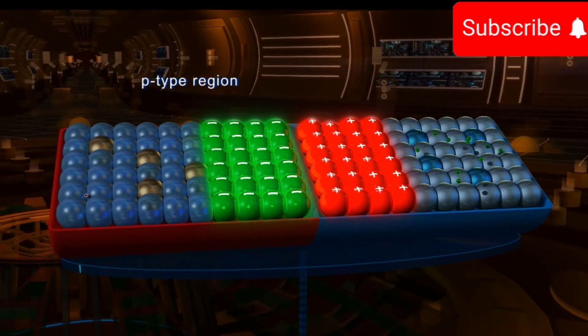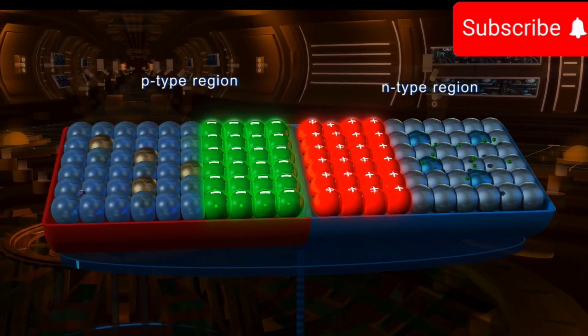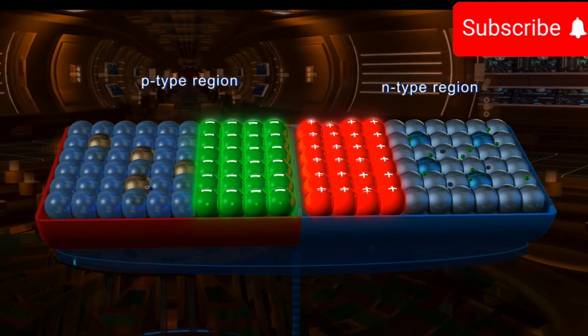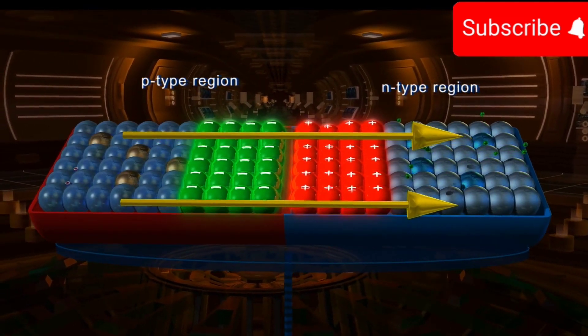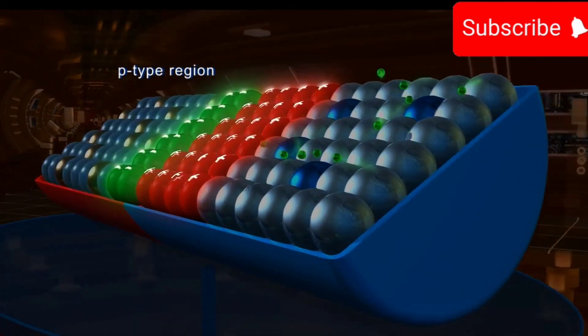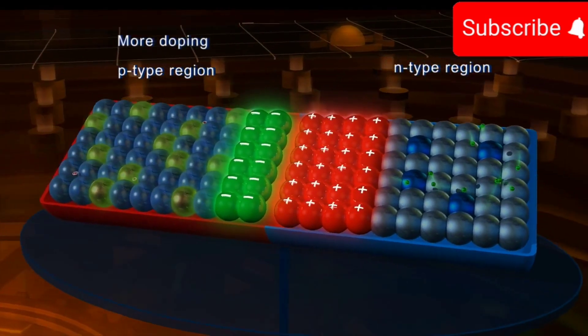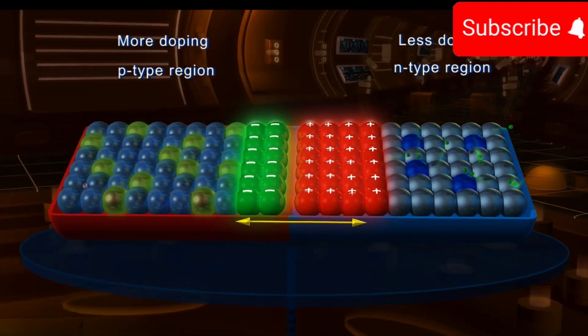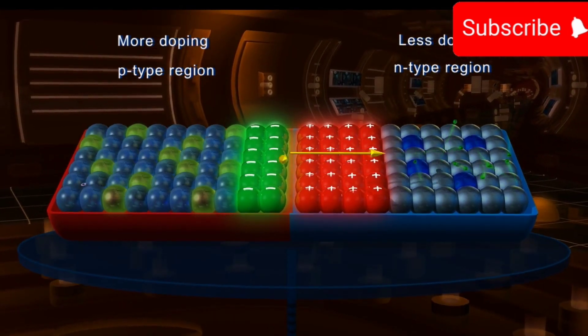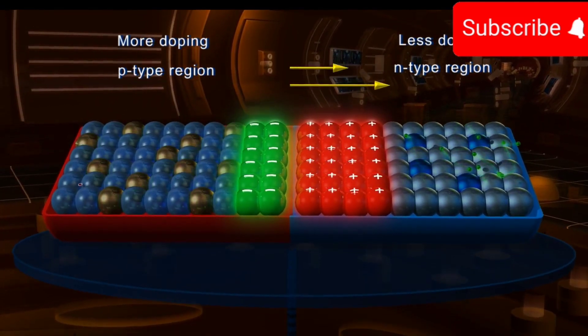If the P region and the N region are equally doped, then the depletion layer on both the sides of the junction will be of the same thickness. On the other hand, if the P side is more heavily doped than the N side, then the width of the depletion layer will be more on the N side than on the P side and vice versa.